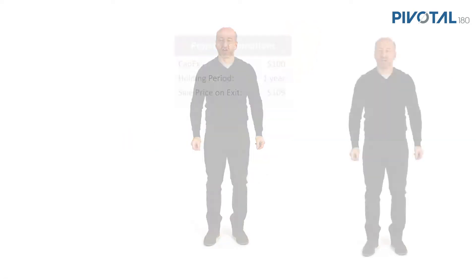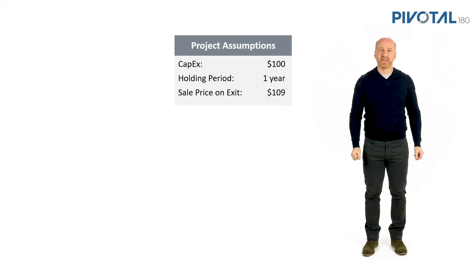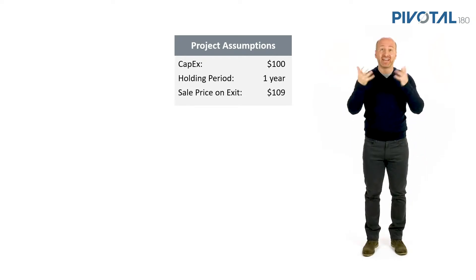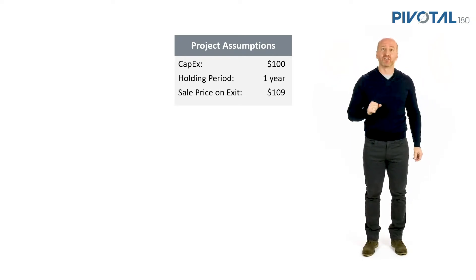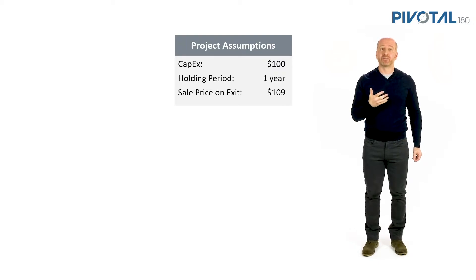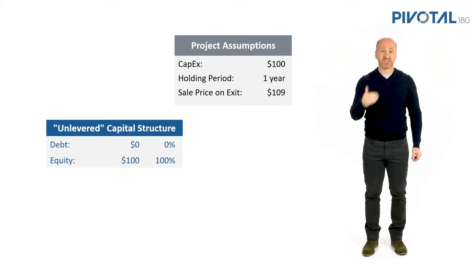It costs a hundred dollars to build this project — that is the capex that's going to be spent. The project will last exactly one year, and at the end of the year we can sell that project and all of the benefit it has generated for a hundred and nine dollars, so there's a nine dollar baked-in profit. That project has been funded with an unlevered capital structure — funded with no debt.